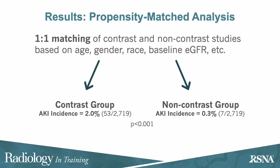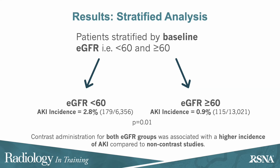gender, race, and other factors found significantly higher AKI incidence in the contrast group at 2.0% versus the non-contrast group at 0.3%. A baseline eGFR less than 60 demonstrated a higher AKI incidence at 2.8% than a baseline eGFR greater than or equal to 60, which was at 0.9%. Notably, contrast administration for both eGFR groups was associated with a higher incidence of AKI compared to non-contrast studies.